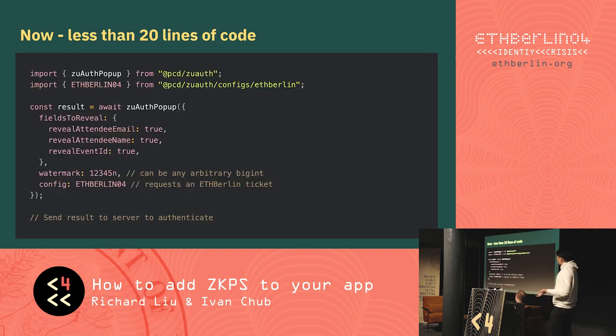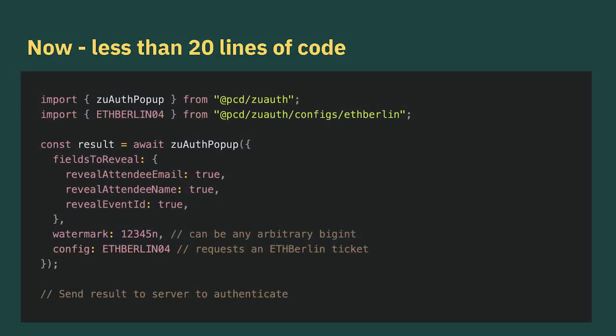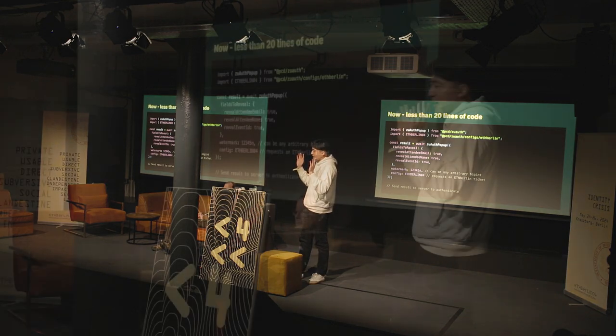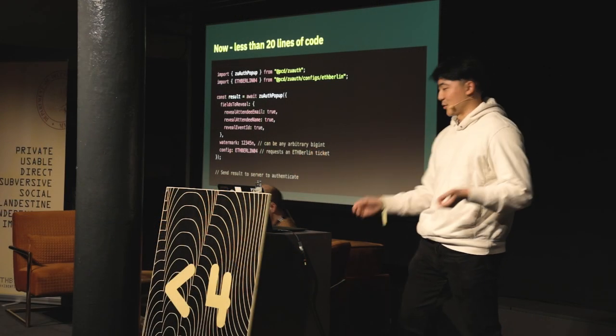So what we've built here — and Rob will talk more about this in a bit — is getting everything you need to create a ZK proof, use the private information within your ZooPass, create a cryptographic proof on it, only reveal certain fields that you want to reveal, all within this single function. It's in TypeScript, so it integrates with any web app that you might deploy. I'll hand it over to Rob now to go more into the details of how this actually works.